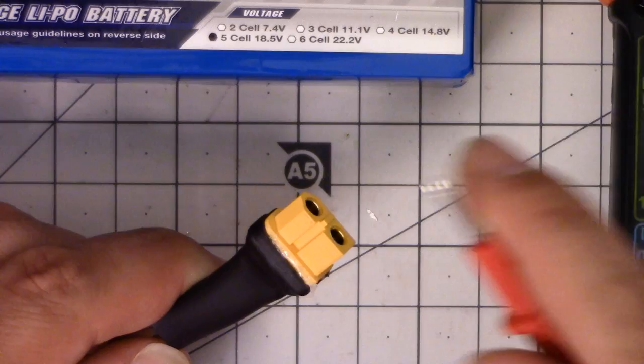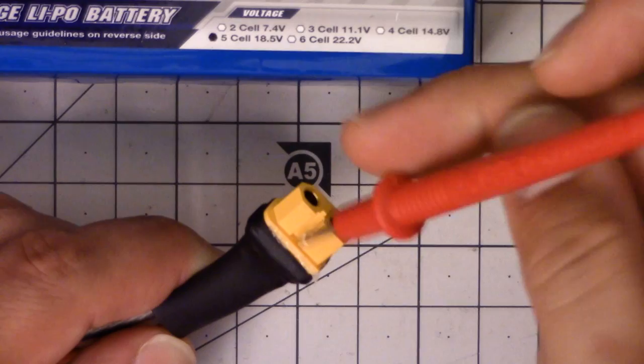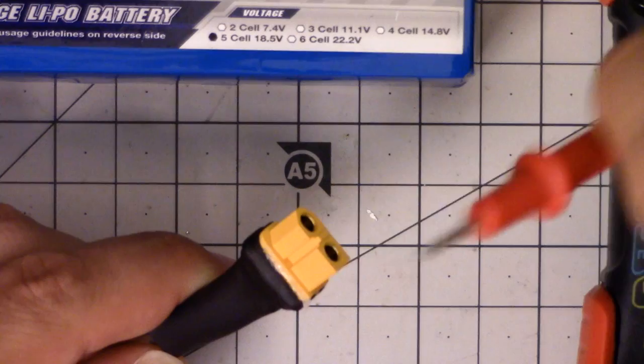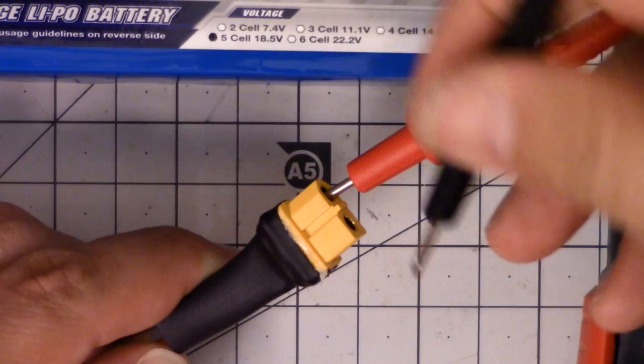So this is intentionally designed to make it very hard for you to accidentally short these two. But one way you could short it is, let's say I've got this probe and it's just barely hanging on here. And then I come in with this other probe, and I cross the streams, right? Don't cross the streams, right? You don't want that.